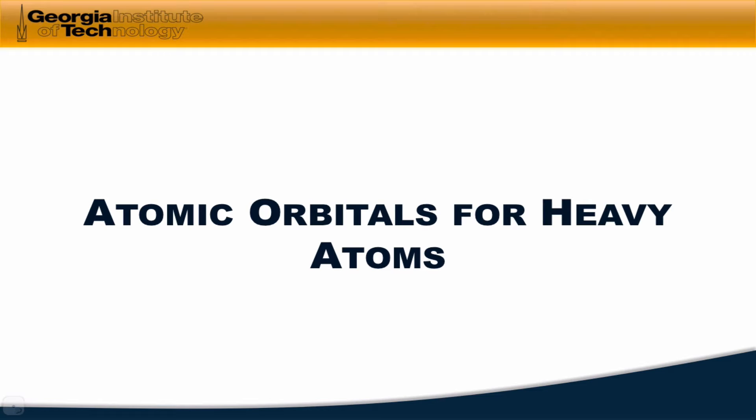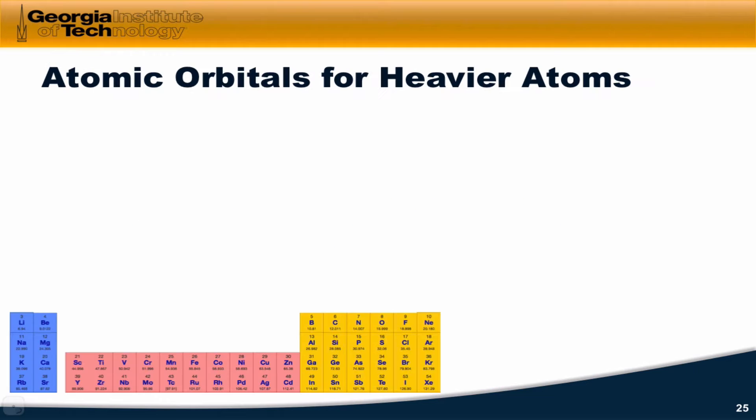What happens when we get to heavier atoms? What do the atomic orbitals look like, for example, for helium, lithium, carbon, oxygen, the halogens?